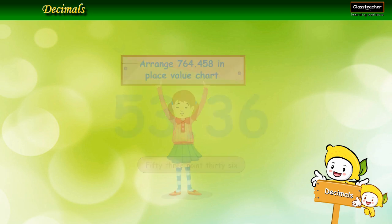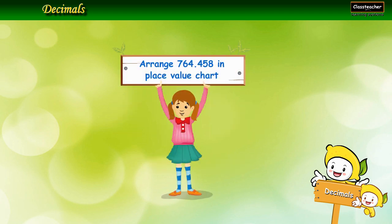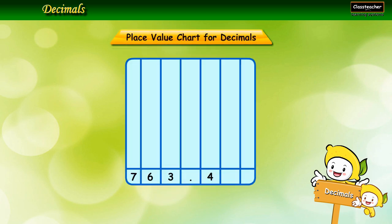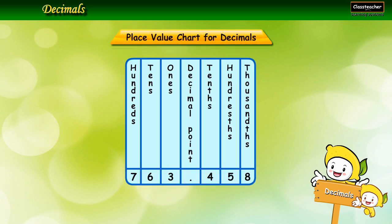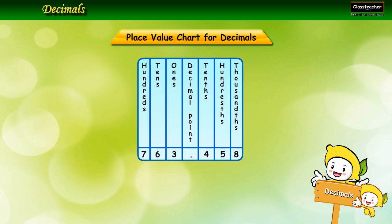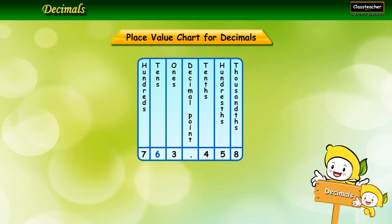Let's learn how to arrange a decimal number in a place value chart. The place value of 7 is equal to 7 hundreds, which equals 7 multiplied by 100, equal to 700. The place value of 6 is equal to 6 tens, which equals 6 multiplied by 10, equal to 60.